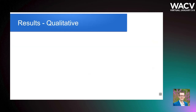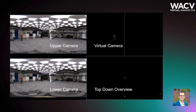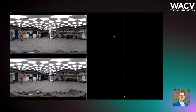We now present qualitative results. On the left-hand side are the input cameras, on the top right is the virtual camera, and on the lower right is the top-down overview of the scene, where the input cameras are in the middle, the virtual camera is behind the input camera, and the person tracks will appear as the scene progresses.